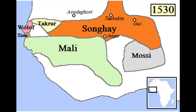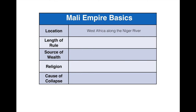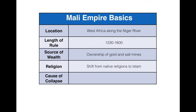The Mali Empire somehow hung on, mainly by holding onto a couple of gold mines, until the 1600s when it broke up into smaller kingdoms. Now let's wrap up with our graphic organizer. Location: West Africa along the Niger River. Length of rule: approximately 1230 to 1600 — about 400 years. Source of wealth: gold and salt mines — not just taxing trade, but actually owning the resources. Religion: a shift from native religions to Islam, mainly through Mansa Musa, who funded mosques, imams, and missionaries.